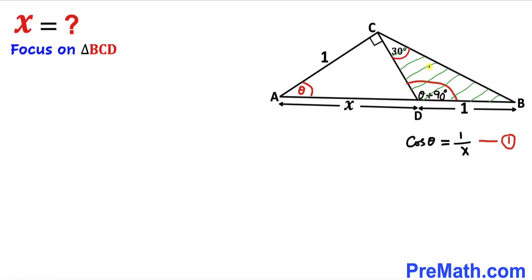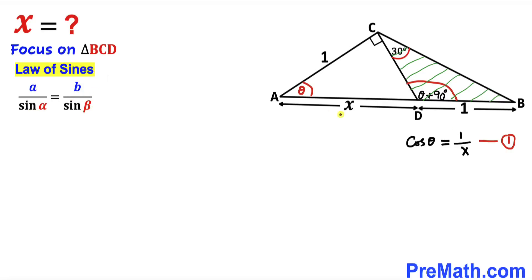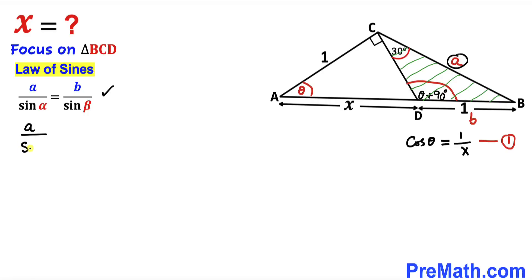Now let's focus on triangle BCD and recall the law of sines: a over sine alpha equals b over sine beta. Label one side lowercase a and the other lowercase b, with angles alpha and beta respectively. Filling in the law of sines: a over sine of (theta plus 90 degrees) equals 1 divided by sine of 30 degrees.